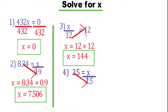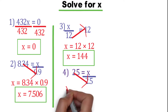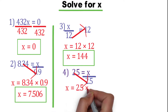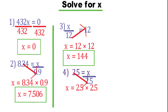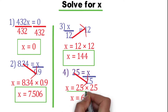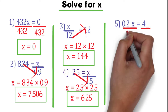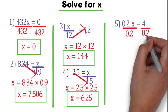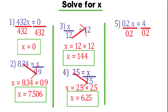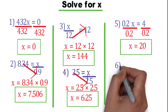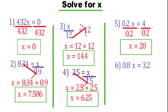By the same way, x equals 2.5 times 2.5. Ignore the decimal point: 25 times 25 equals 625. Insert the decimal point after two digits from the right, so x equals 6.25. Number 5: 0.2x equals 4. Divide both sides by 0.2 — the coefficient of x. Now x equals 4 divided by 0.2, so x equals 20.